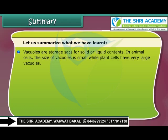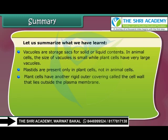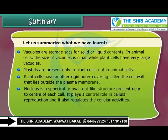Vacuoles are storage sacks for solid or liquid contents. In animal cells the size of vacuoles is small, while plant cells have very large vacuoles. Plastids are present only in plant cells, not in animal cells. Plant cells have another rigid outer covering called the cell wall, lying outside the plasma membrane, mainly composed of cellulose, providing strength to the cell. The nucleus is a spherical or oval structure present near the center of each cell; it plays a central role in cellular reproduction and also regulates cellular activities.